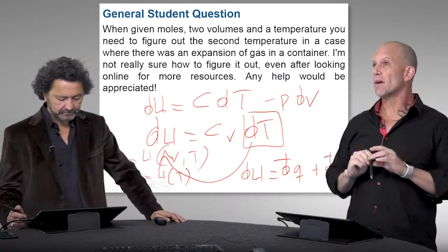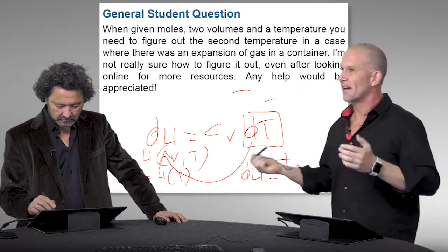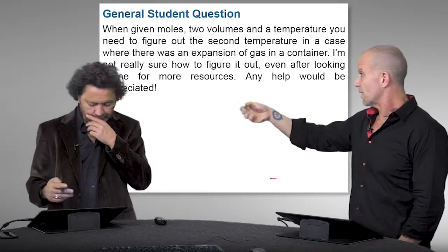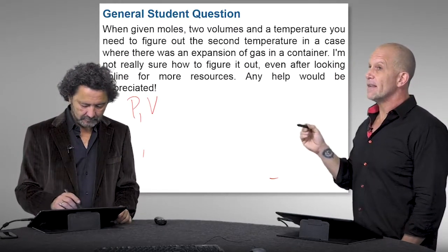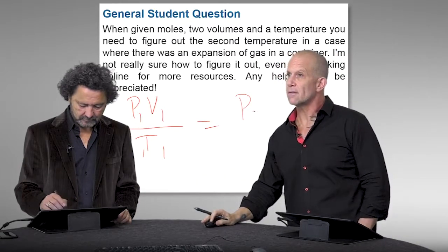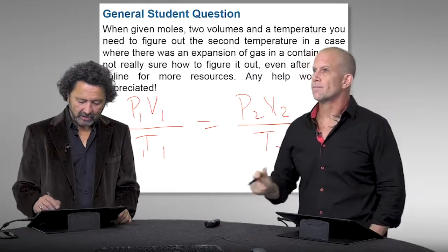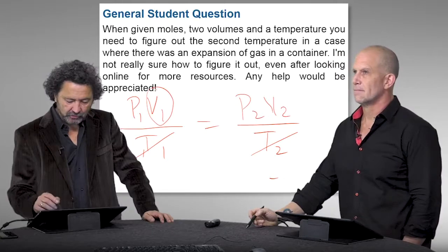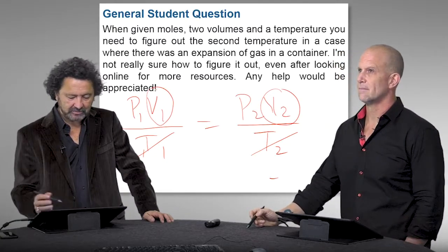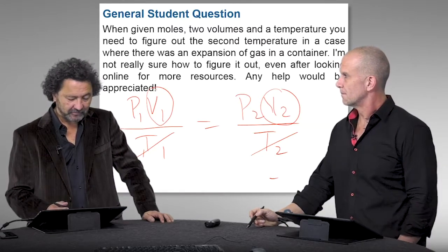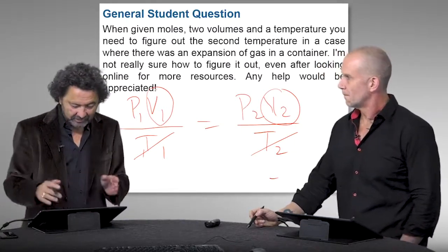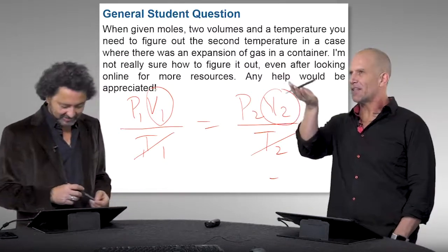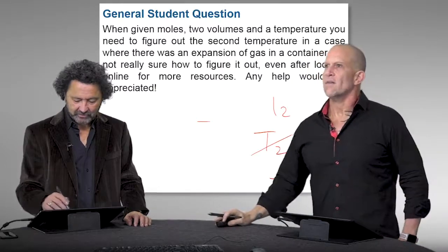You would have to state that this is the isothermal expansion of an ideal gas. But as noted, they wouldn't ask for a second temperature if it were the same as the first — that would be trivial. So the more likely scenario requires us to both assume a fairly simplistic equation of state where internal energy depends only on temperature, and then proceed with the adiabatic assumption.